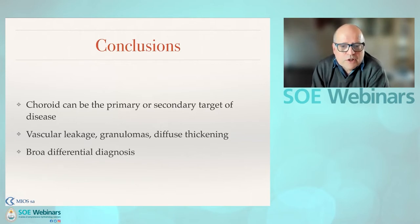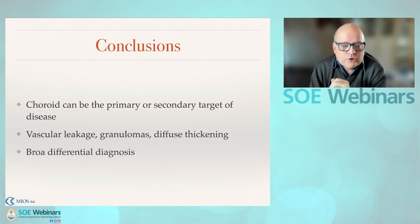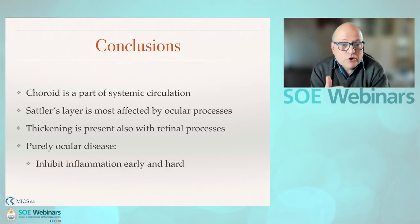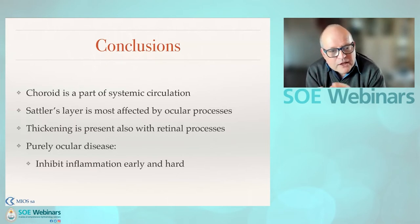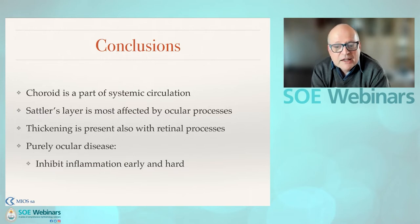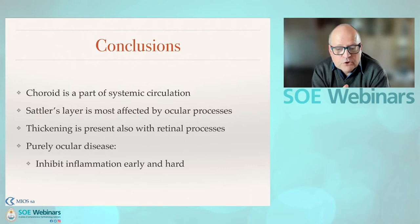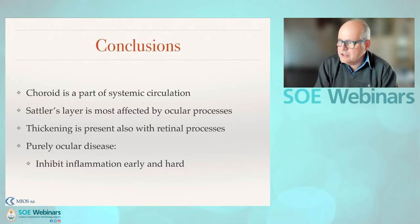In conclusion, the choroid can be the primary or secondary target of disease. Vascular leakage, granuloma formation, and choroidal thickening are the things you want to look for. Consider a broad differential diagnosis because the choroid is part of the systemic circulation. Sattler's layer — the inner layer of the choroid — is most affected by these inflammatory processes. And the purely ocular diseases like VKH and sympathetic ophthalmia require strong inhibition early and for a sufficient amount of time. Thank you very much.